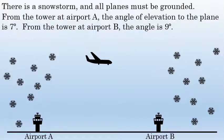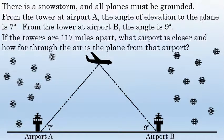From the tower at Airport A, the angle of elevation to the plane is 7 degrees. From the tower at Airport B, the angle is 9 degrees. If the towers are 117 miles apart, what airport is closer and how far through the air is the plane from that airport?